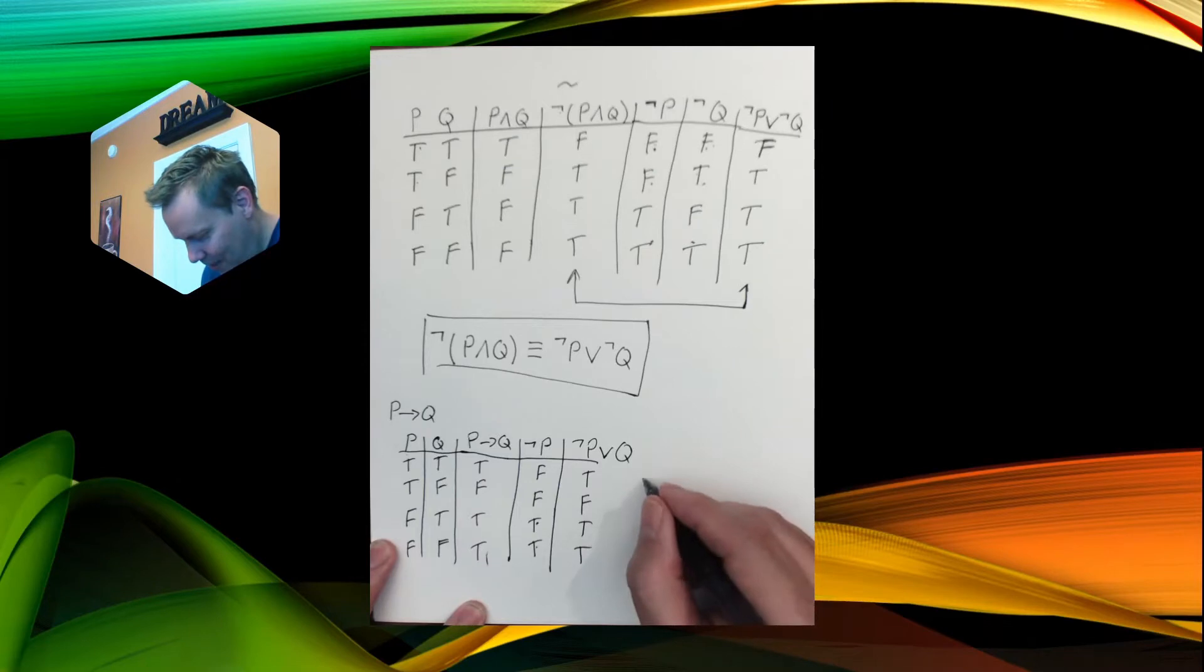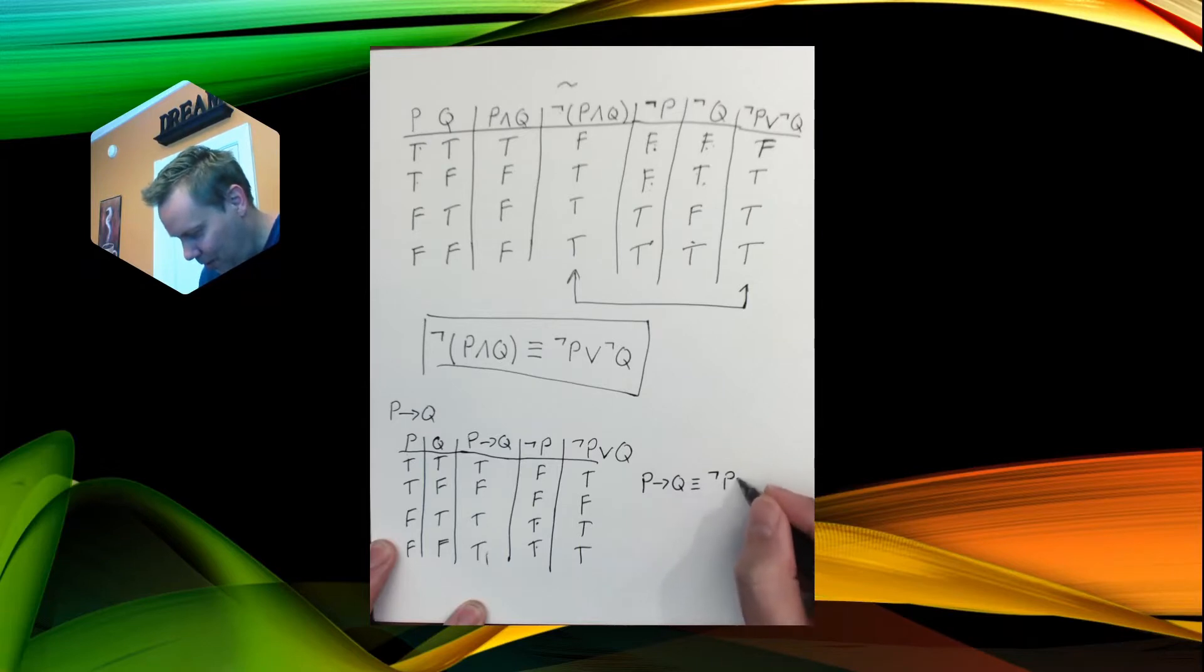So this little truth table is our second proof. This says that p implies q is equivalent to not p or q. So when we're looking at these truth tables, we have to notice various combinations. Throughout the Zybook and throughout some of the homeworks, you're going to have lots of examples to do.